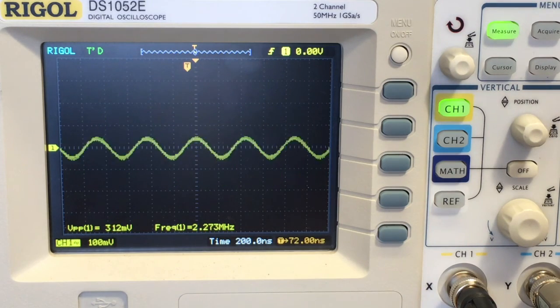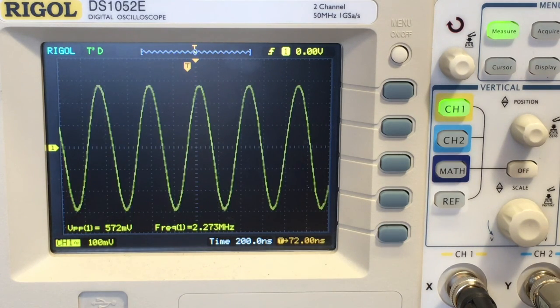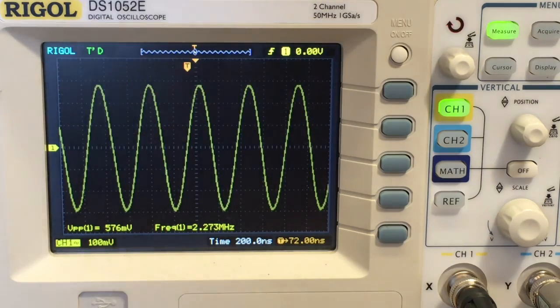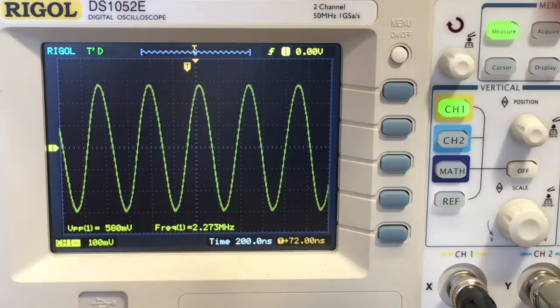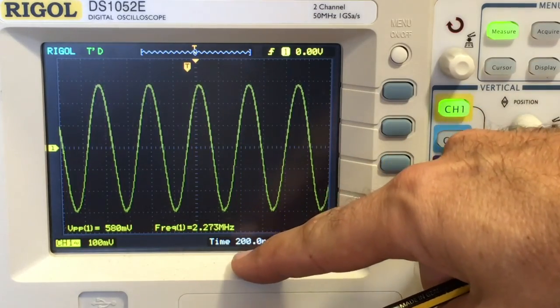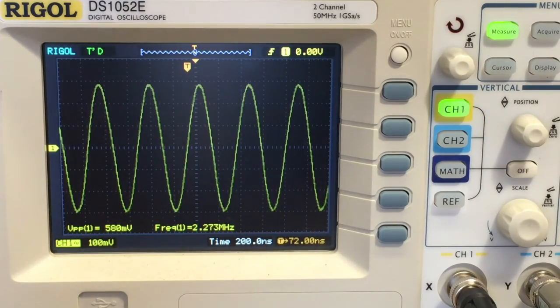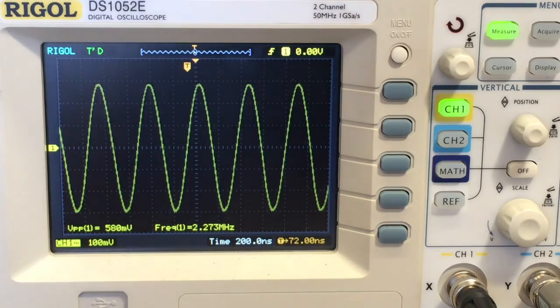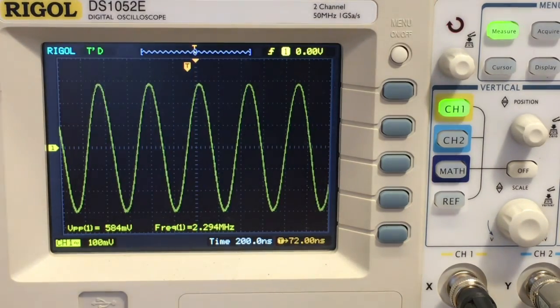Now what I've done is I've got it at the far end. I've got the tuning dial at the far end and what we see here is a frequency of 2273 kilohertz. Let's call it 2273 kilohertz.